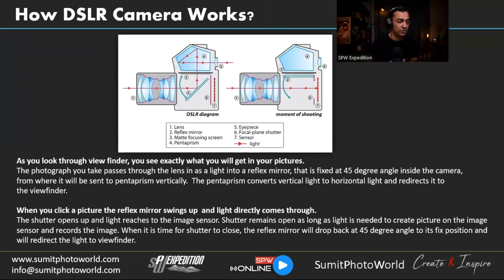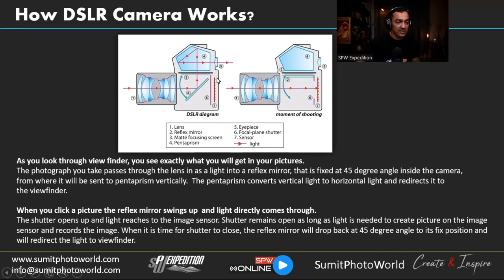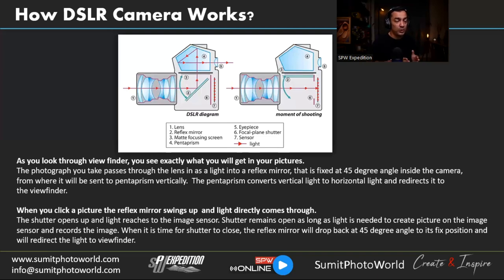First topic: how a DSLR camera works. You can see two diagrams of DSLR components on screen. The left image shows the DSLR when viewing through the viewfinder. Components include: lens, reflex mirror, matte focusing screen, pentaprism, focal plane shutter, and sensor. When light enters through the lens it reaches the reflex mirror, which sits at a 45-degree angle, redirecting horizontal light vertically toward the pentaprism.